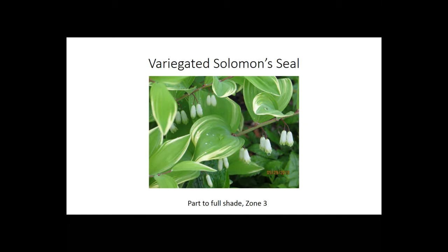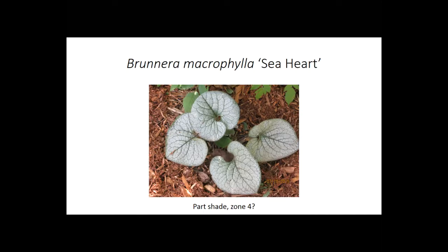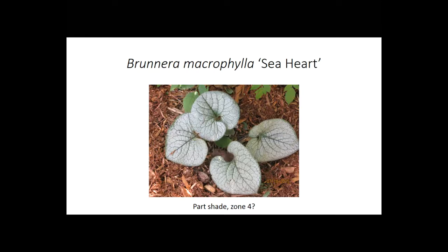Brunnera macrophylla 'Sea Heart' is a newer cultivar that just glows in the shade — it lights up the area with silvery leaves. This is really good in part shade; too much sun will burn the leaves. I've listed it as zone 4 with a question mark, meaning we're not entirely sure how far north we can go in North Dakota. I've seen it growing successfully in Bismarck and Fargo. If you're north of I-94, consider mulching it. The flowers are sky blue and bloom in May — a wonderful welcome to spring.